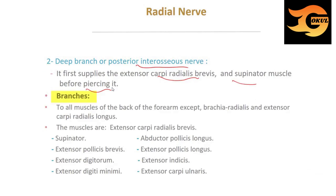The branches of the posterior interosseous supply all muscles of the back of the forearm except brachioradialis and the extensor carpi radialis longus, which it takes from the main trunk of the radial nerve. The muscles supplied from the posterior interosseous include: extensor carpi radialis brevis and supinator muscle.